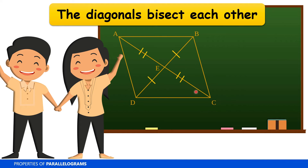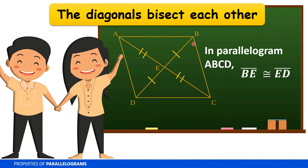Since the diagonals bisect each other, diagonal BD is divided into two equal parts: segment BE is congruent to segment ED. E is the midpoint that divides each diagonal into two equal parts. Similarly, for diagonal AC: segment AE is congruent to segment EC.